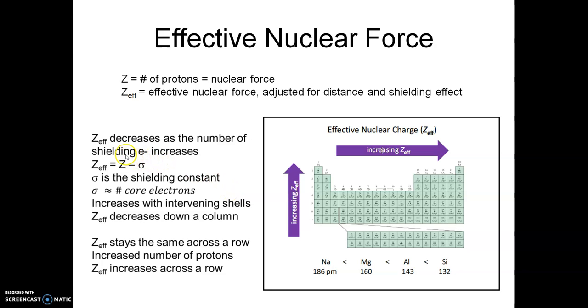The way we mathematically handle that is Z effective will equal Z, the true nuclear force, minus this sigma, which is a shielding constant. The shielding constant, a lot of factors go into that. But we can approximate it by saying that the sigma, the shielding constant, is approximately equal to the number of core electrons. So again, if we go across period 2, 1s2 is the core, so it's just two core electrons. For lithium right here, you have three protons. That Z minus two core electrons gives you an effective nuclear force of one. Going across to beryllium, you now have four protons in the nucleus. That's your Z minus still only two core electrons gives you an effective nuclear force of two. So you see how effective nuclear force has gone up as we went across.